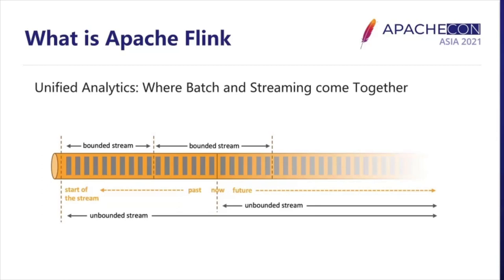Is there an invisible boundary between real-time analytics semantics and batch analytics semantics that forces us to use separate pipelines? It turns out there is no such boundary. Historical data processing, also known as bounded data analytics, is just a special case of unbounded data analytics. Bounded data analytics assumes no new data will arrive at the time of running the workload, while unbounded data analytics is always aware of and able to handle newly arriving data. That is what we call unified analytics.